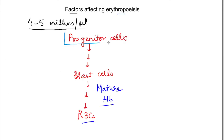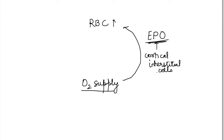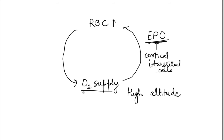Erythropoietin basically works at the progenitor cell stage, causing them to become blast cells, so RBC production increases and oxygen supply is maintained. Sometimes it works for other reasons too — for example, at high altitude, the number of RBCs may be normal but oxygen supply is affected because there is less oxygen in the atmosphere. So the kidney also produces EPO and RBC production increases, giving us physiological polycythemia at high altitude.